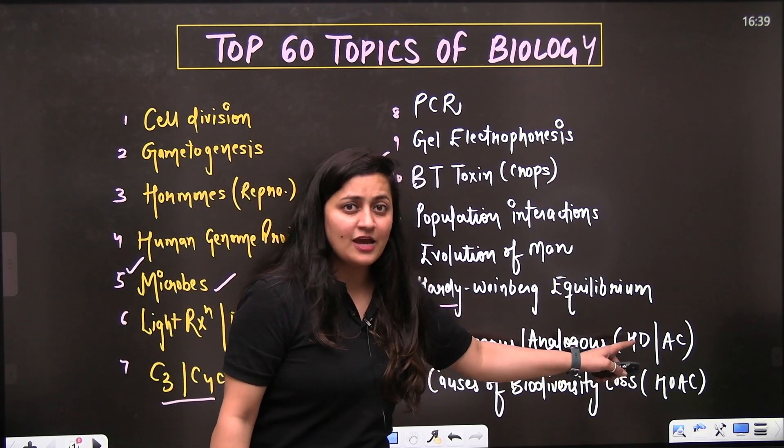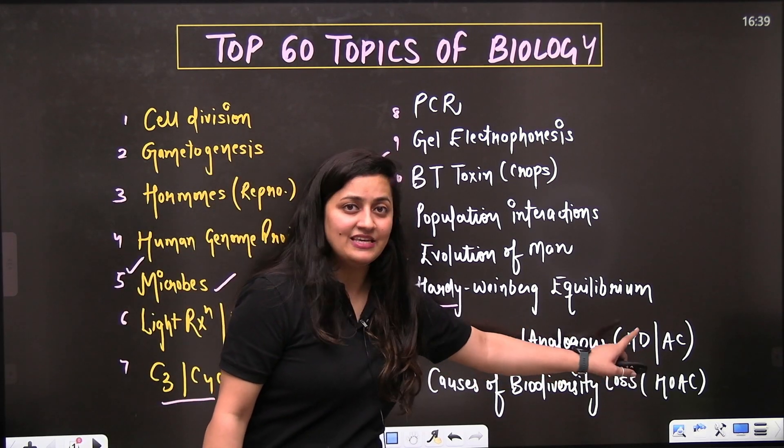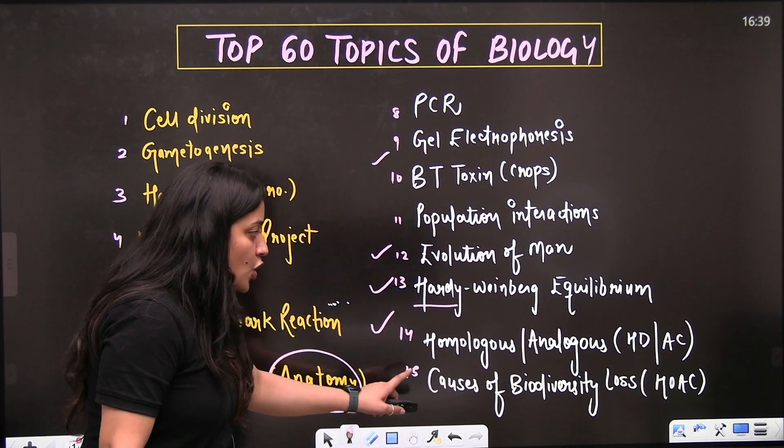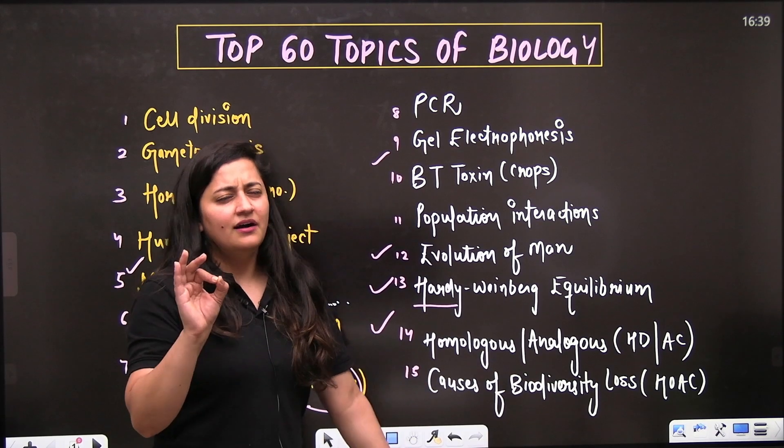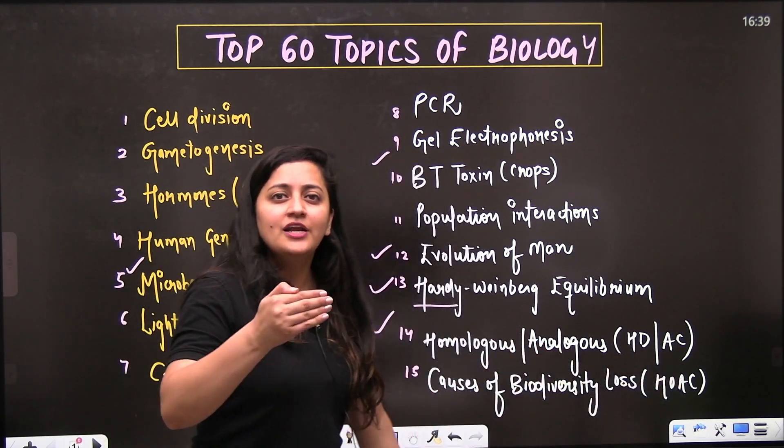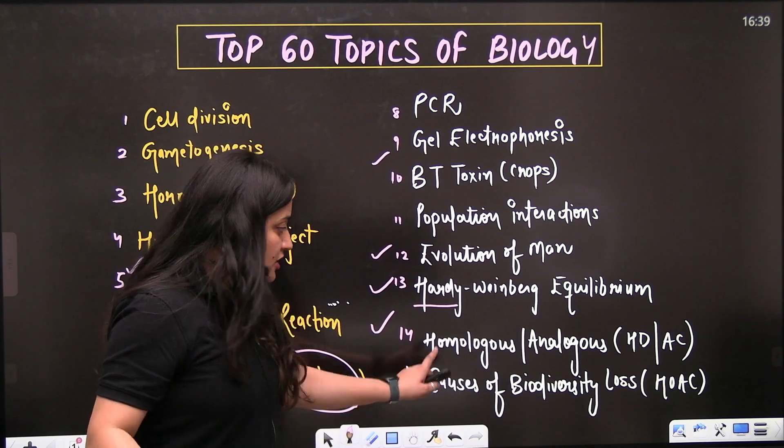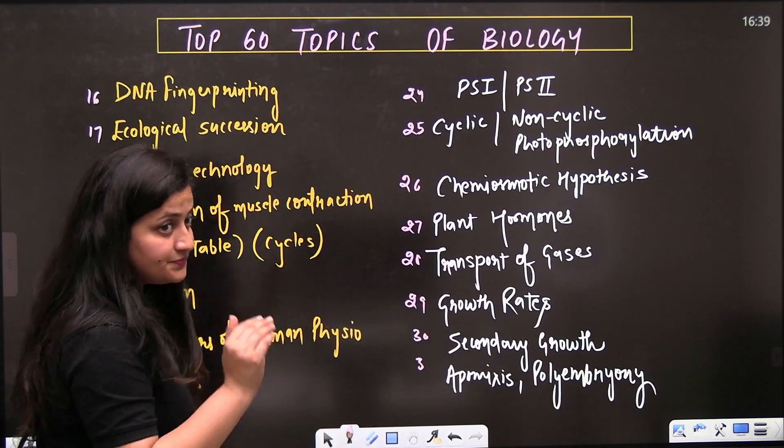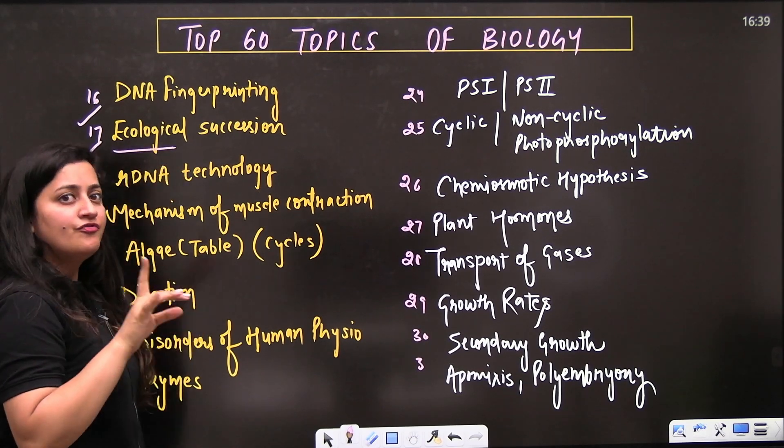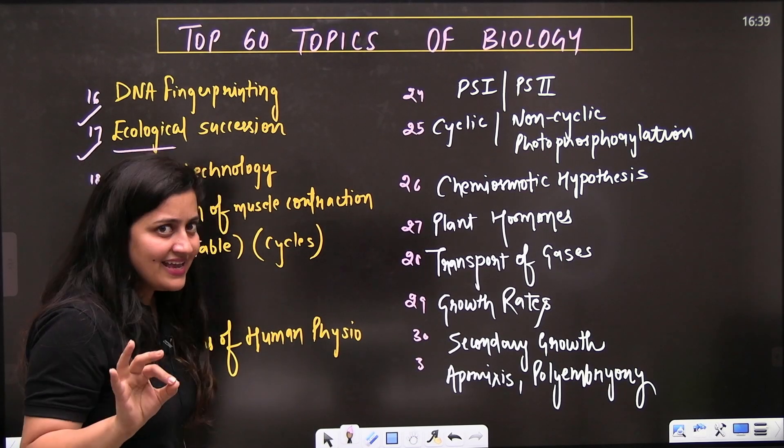Then comes the causes of biodiversity loss - a very direct topic. Again, the trick is there: WHO ACT - habitat loss and fragmentation and all. So do revise these topics. Then DNA fingerprinting is important, ecological succession from the chapter ecosystem is again important and easy as well.